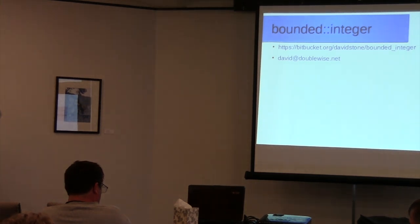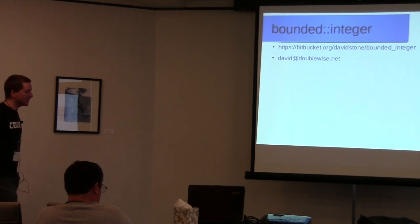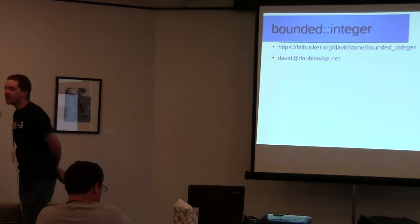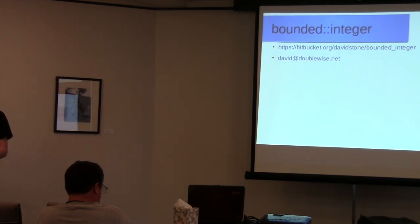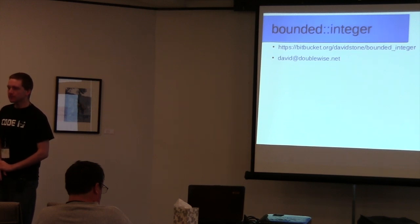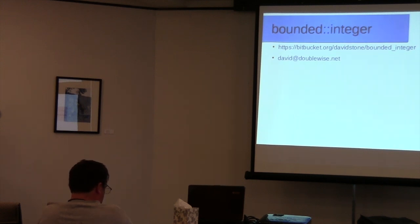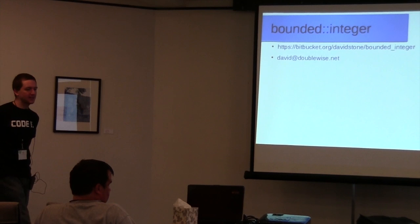When you're using the user-defined literal or the make factory function with a template integer value, there is no check at all — the library knows the exact value being used, constructing a temporary of a type with a range of just one. If you assign it to another type, you can get a compile-time check. Using the user-defined literal was the main motivation, allowing compile-time constants to have a single value as the whole range with no checks associated with creating it.